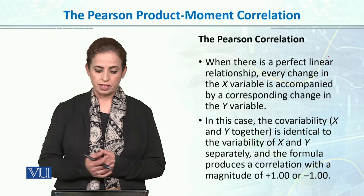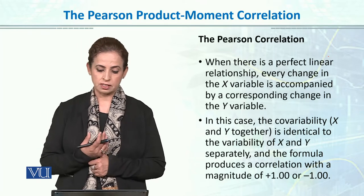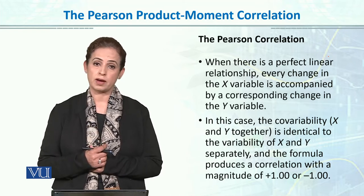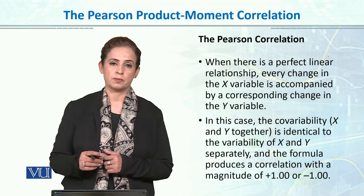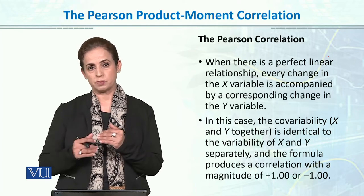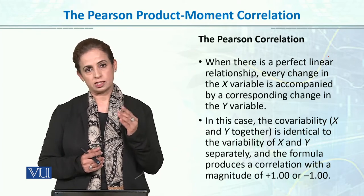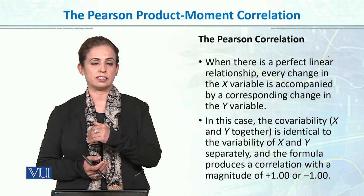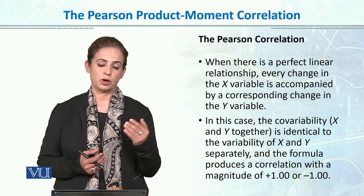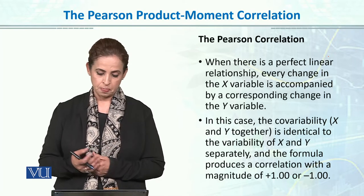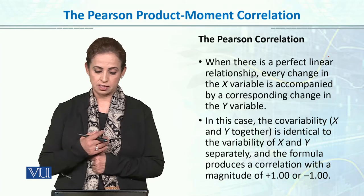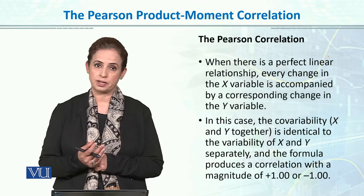So when there is a perfect linear relationship, every change in the x variable is accompanied by a corresponding change in the y variable. If x is perfectly linear, then the change in x corresponds accordingly. So a one-point increase in x variable, if it is perfectly related, results in a one-point change in y variable. In this case, the co-variability of x and y together is identical to the variability of x and y separately.